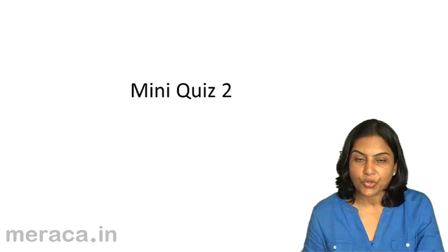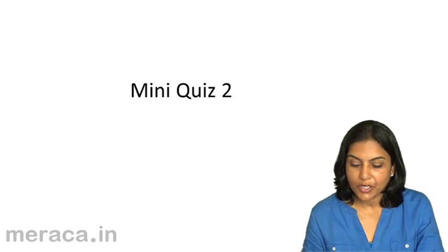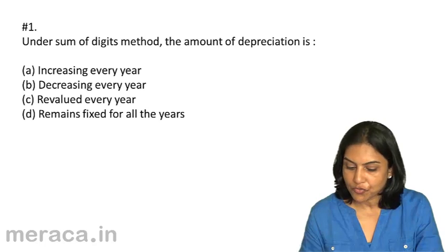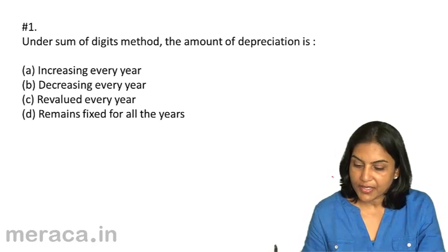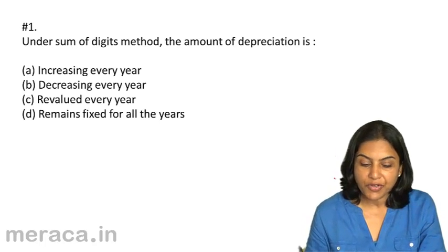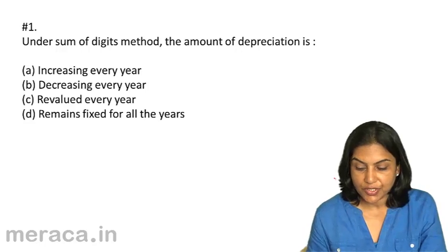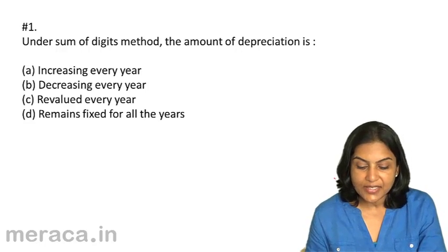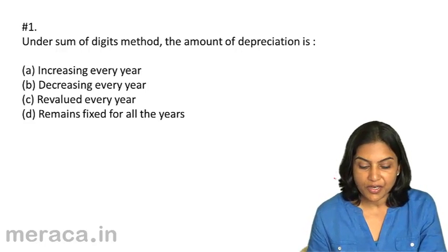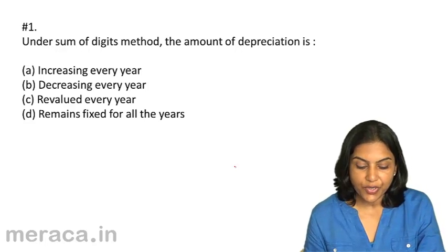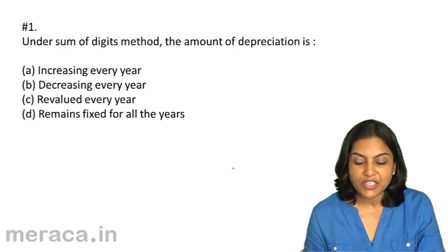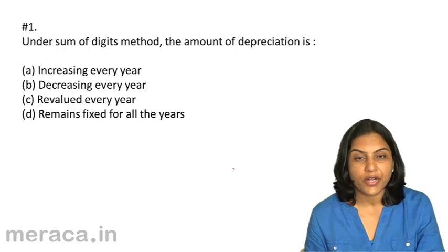We can take a short quiz in order to test our understanding so far. Under the sum of digits method, the amount of depreciation is: A, increasing every year; B, decreasing every year; C, revalued every year; D, remains fixed for all years.